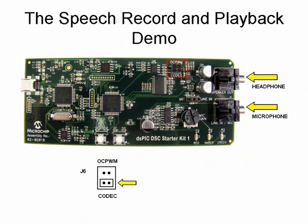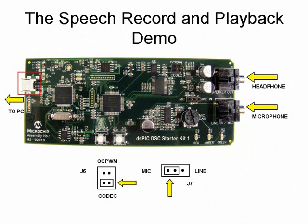Set jumper J6 to codec position. Set jumper J7 to mic position. Connect the board to the PC using the USB cable. You won't need MPLAB IDE to run the demo. An introductory message will now play on the headphones. This message introduces the speech record and play demo. This introductory message is stored on the serial flash memory device in an encoded form using the G.711 compression technique.